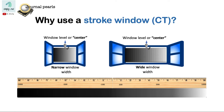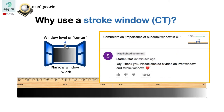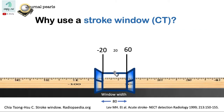Hi, this is the third video about windowing in CT. This is a response to a comment by Storm Grace. One of the brain window settings includes a window width of 80, centered at 20.